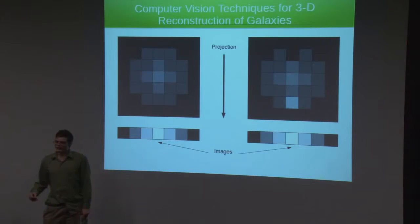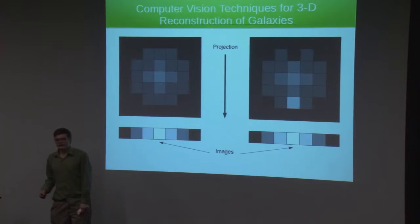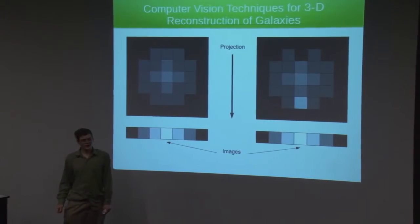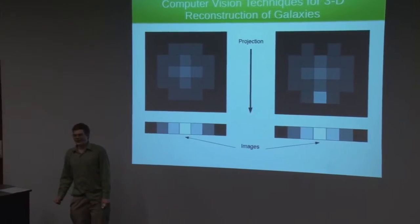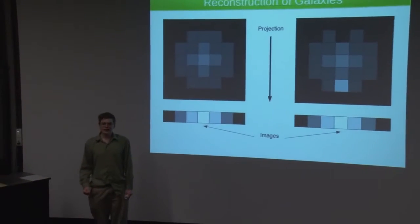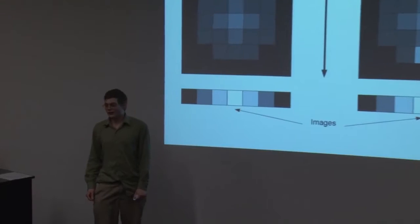Now, one difference between images of galaxies and other sorts of images that you see is that you can't go around to the other side of the object to get a different view. Millions of light years is a little far to go for one picture.